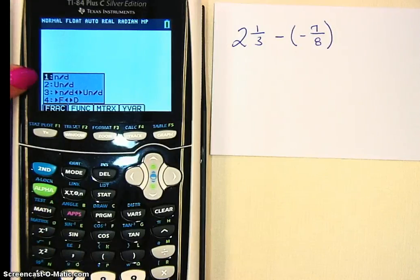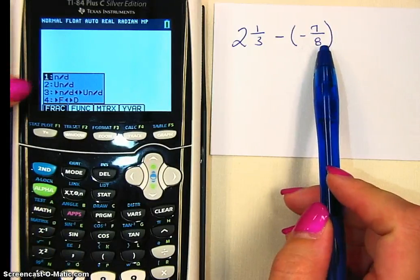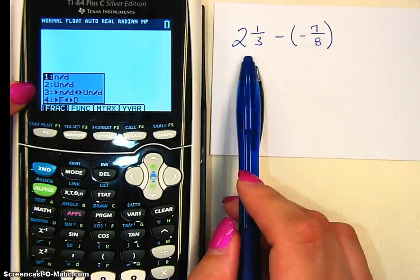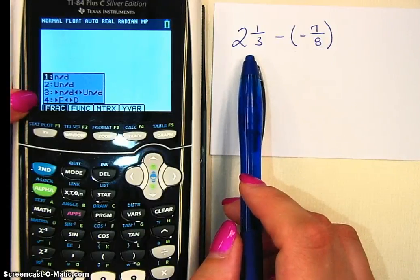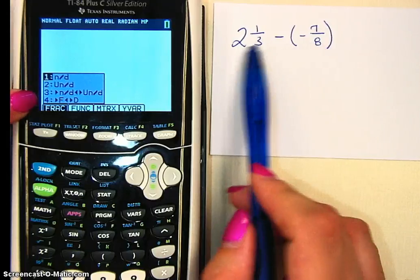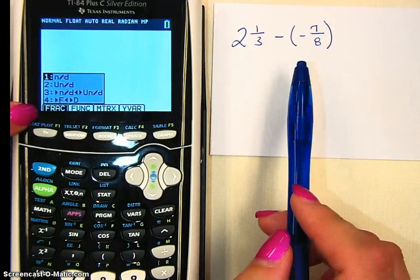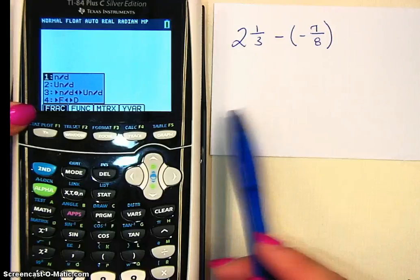It's going to give you four options. It has n over d, which is just a normal fraction like 7/8. Un slash d, which is a mixed number like 2 and 1/3. Option 3 converts between mixed and improper fractions. And option 4 changes a decimal to a fraction or a fraction to a decimal.